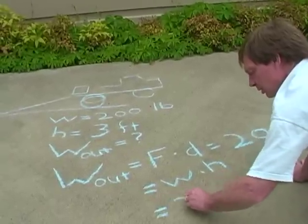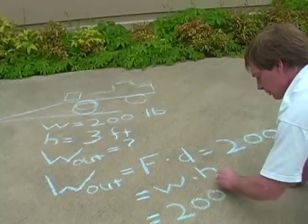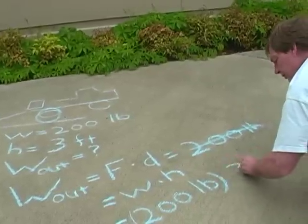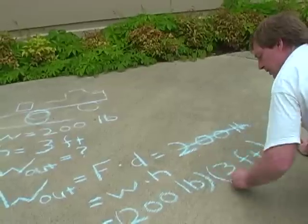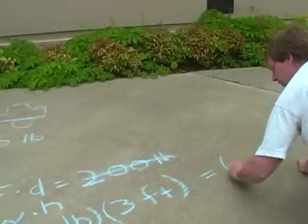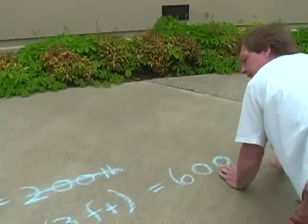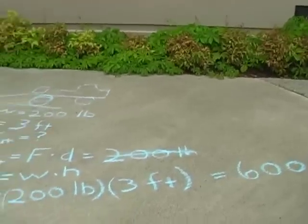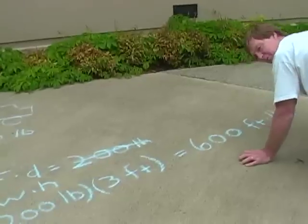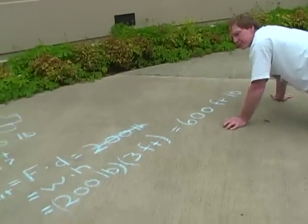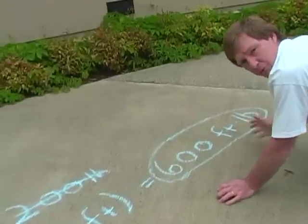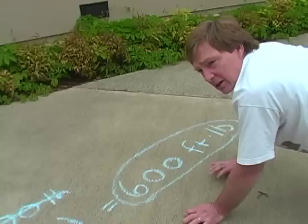And that's going to be 200 pounds times the height of 3 feet. And that's going to give me 600 feet times pounds, foot pounds. I could say pound feet, but generally, it's given in foot pounds. So that's my output work, 600 foot pounds of work. I've raised the energy of that object by raising it up there by 600 foot pounds.